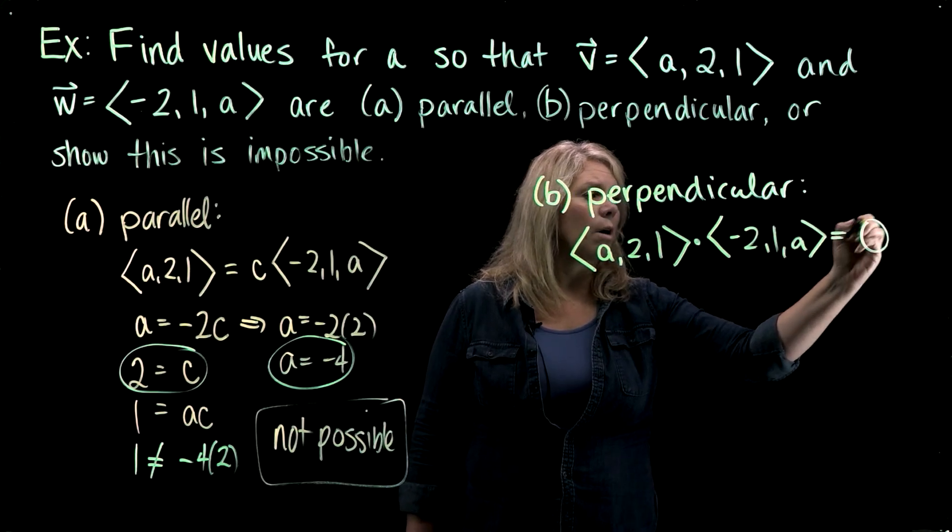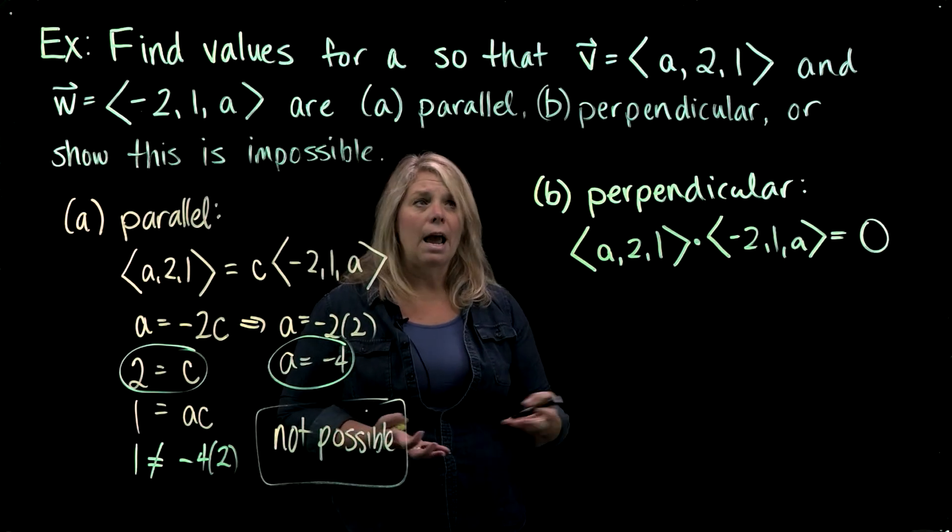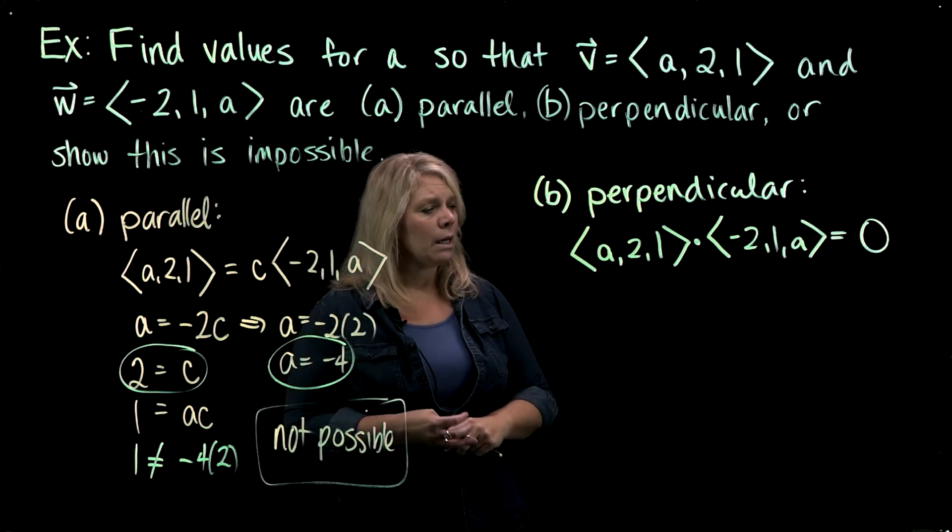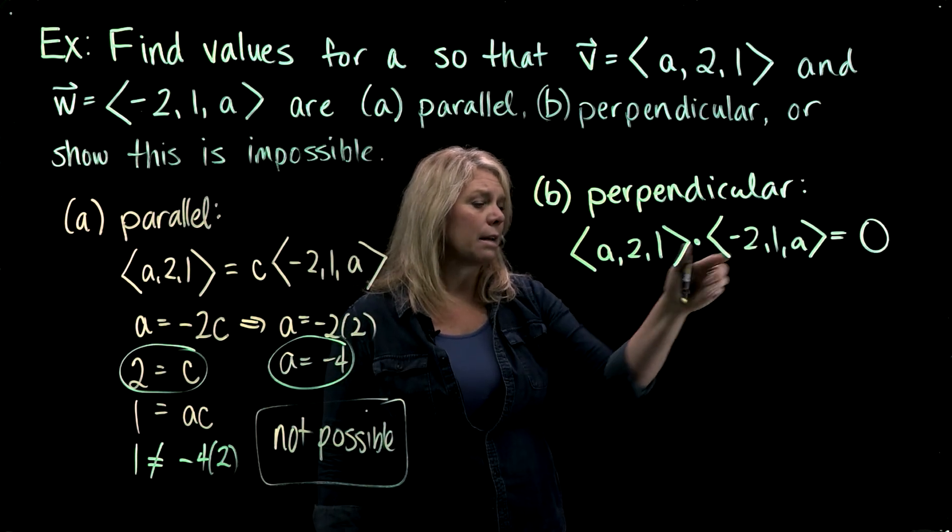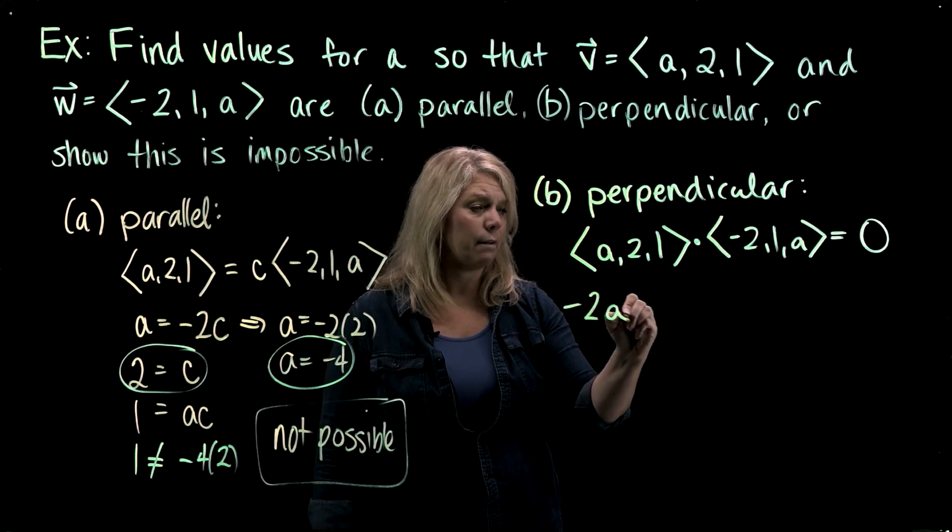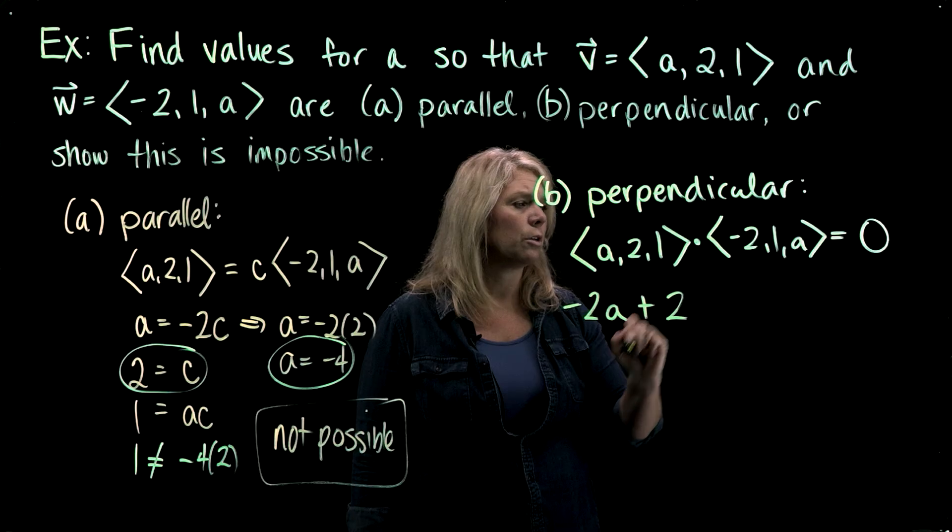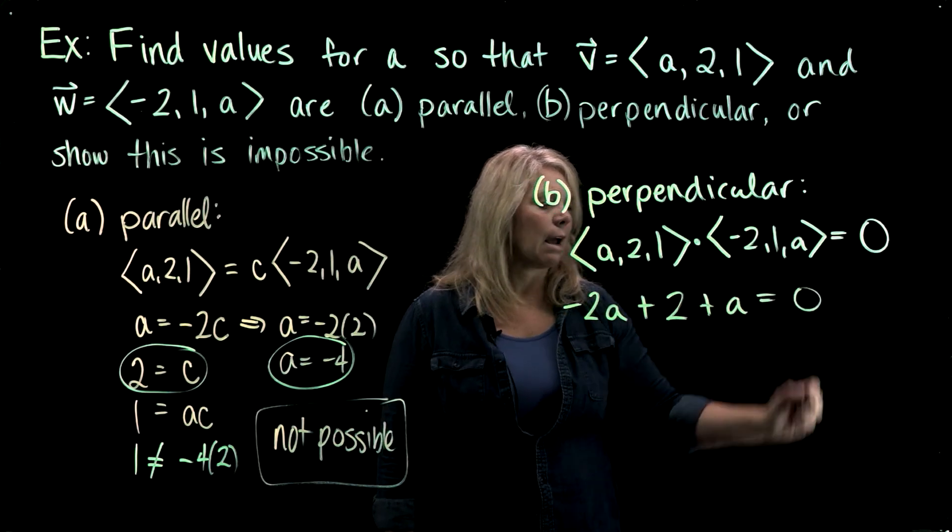And I want that dot product to equal zero. So if there is a possible value for a that makes these two vectors perpendicular, then this equation has to be true. So on the left side here, I'm just going to go ahead and do that dot product. So I'll have a times negative two or negative two a plus two times one is two plus one times a. And that's going to have to equal zero.